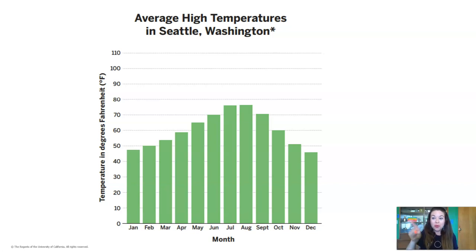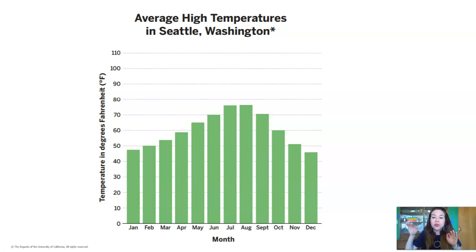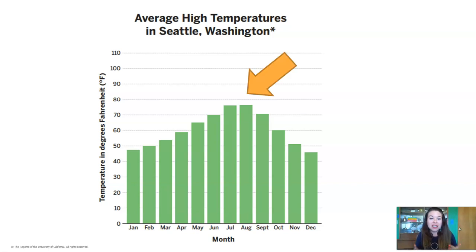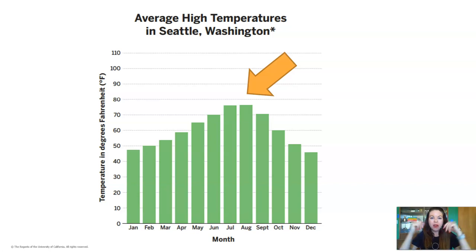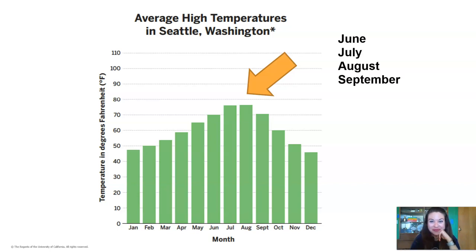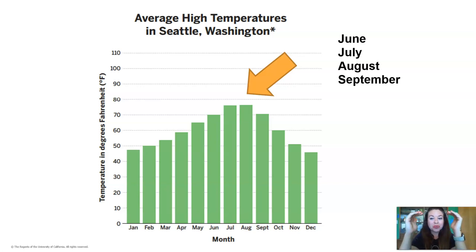It's showing us temperature in Seattle, Washington. So we're only talking about temperature right now, not precipitation. Take a look at the bars. Use your finger to trace the outline of the top of the bars — it goes almost like a hill. Have we seen that pattern of climate and temperature before? Yes, we've definitely seen that pattern where it starts out with low temperatures, the temperatures get higher in the middle of the year, and then they get lower at the end. So there is a warm season right here in the center of the graph. June, July, August, and September are the warm months in Seattle.